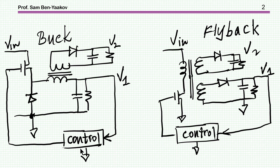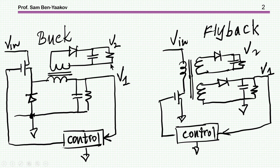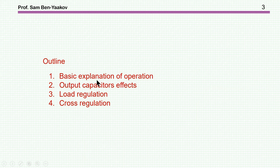So what is the subject we are going to discuss? We are talking about an auxiliary winding on a main inductor in a PWM converter — here it's shown in the back — and also in a flyback, it's a secondary winding. This is a more familiar configuration; this is perhaps less familiar. Here we have the inductor of the buck, the switcher, a diode, and the inductor, and there is another winding on the inductor to provide another auxiliary power supply, which is isolated. I'm going to cover a basic explanation of the operation of this piggyback winding and discuss the role of output capacitors, as they have an important effect on the operation.